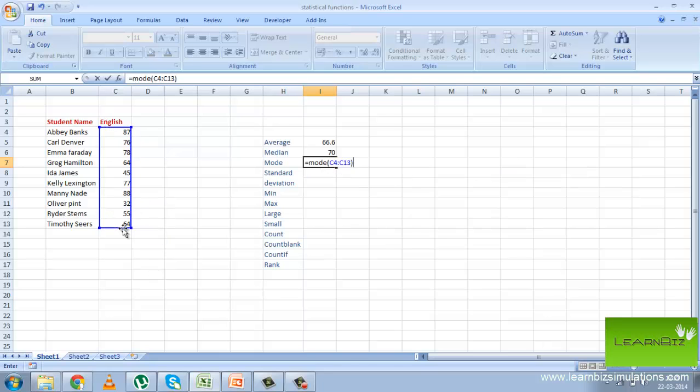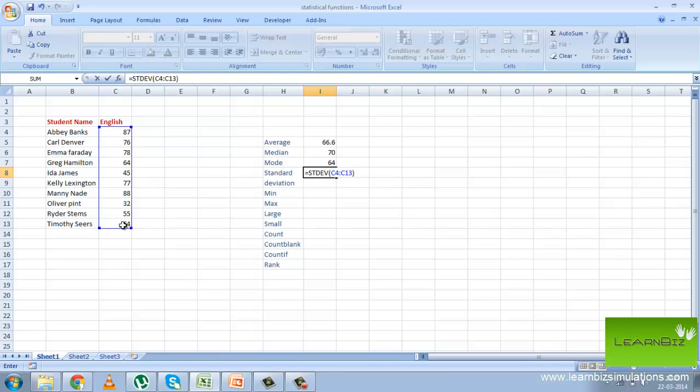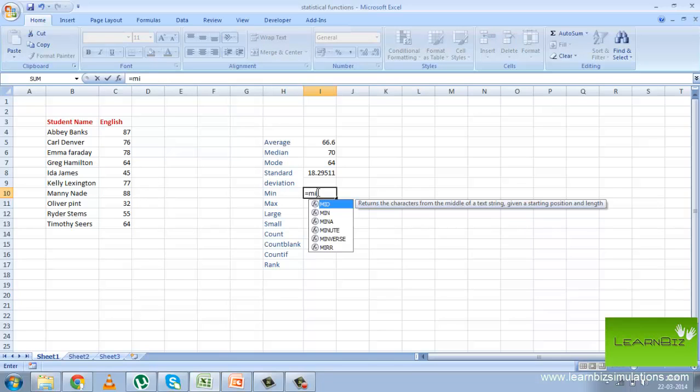The standard deviation is calculated by using the n-1 method. That is, it assumes the arguments are a sample of a population. If the data represents the entire population, use the stdevp function.